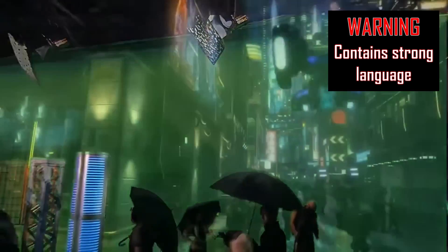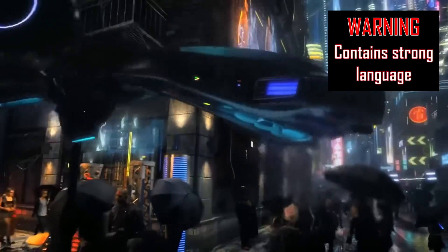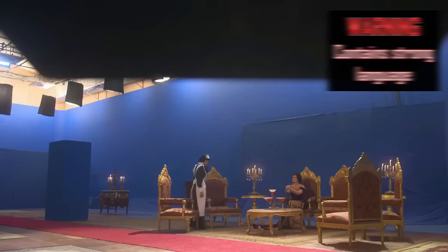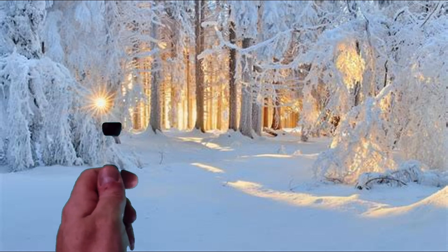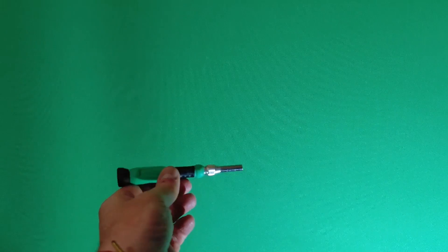Chroma keying, or green screen as it is more commonly known, has become ubiquitous in the movie production industry. It has become so accessible that anyone at home can create their own special effects.